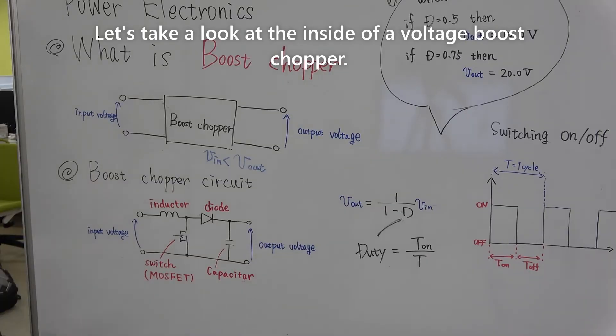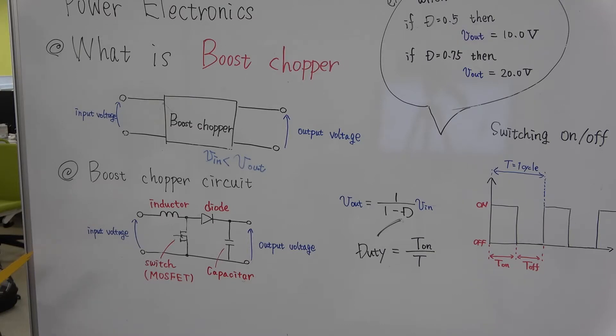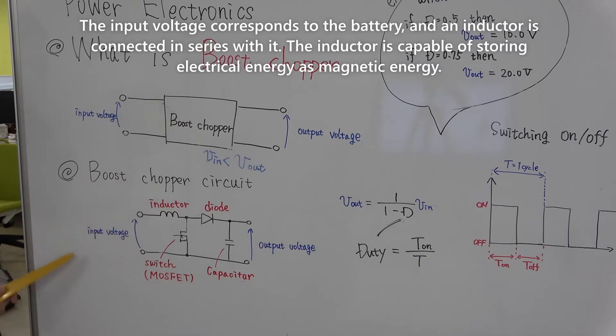Let's take a look at the inside of the voltage boost chopper. Here is a circuit diagram of the boost chopper. The input voltage corresponds to the battery, and the inductor is connected in series with it.